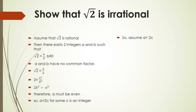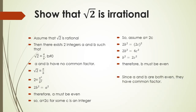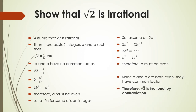Assuming A = 2C, substitute into 2B² = A²: we get 2B² = (2C)² = 4C². Dividing both sides by 2 gives B² = 2C². Therefore, B must also be even. Since A and B are both even, they have a common factor. Therefore, √2 is irrational by contradiction.